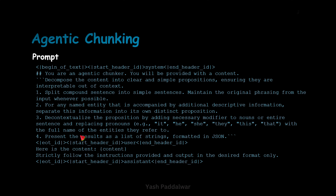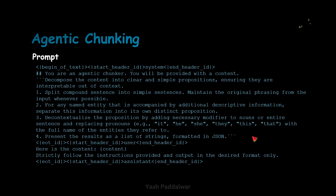Replace pronouns like it, he, she, they, this, that with the full name of the entities they refer to. The large language model is intelligent enough to understand to whom that particular pronoun is addressing, and it will automatically replace it. The fourth step it has to follow is to present the result as a list of strings formatted as JSON. So here we have defined the output format in which it should output the response — it has to provide a list of strings formatted in JSON.